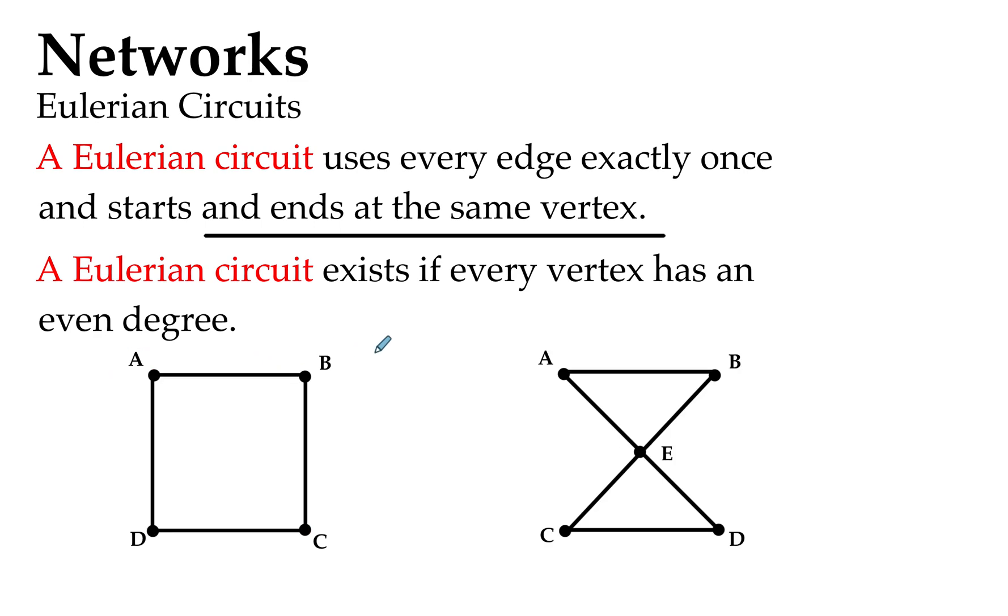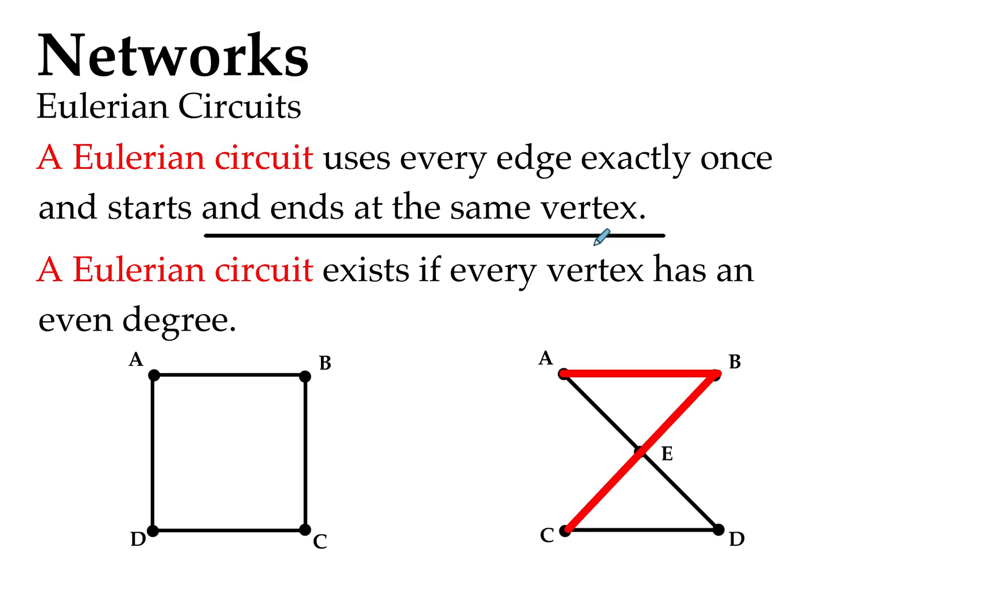So certainly every vertex has an even degree on that shape. Let's check out another one over here. And we'll go around it with our red fanciness. That's A to B, B to C, C to D, and D to E up there. So, have we used every edge exactly once? Yes, we have. And have we started and finished at the same vertex? I'm pretty sure we started at A and finished at A.